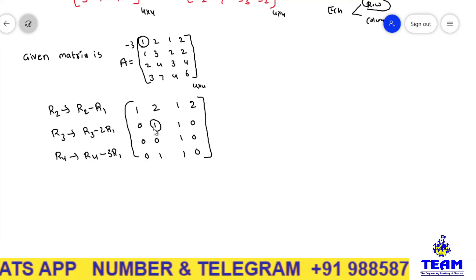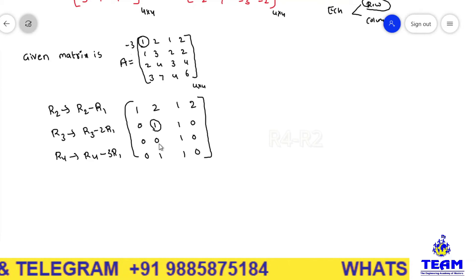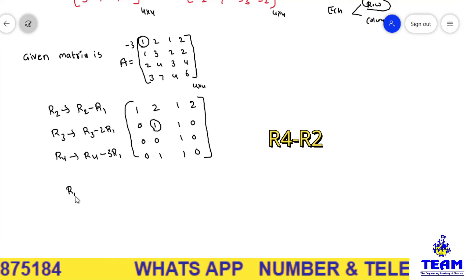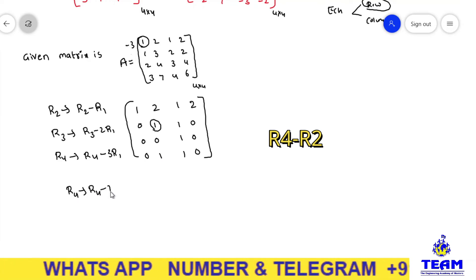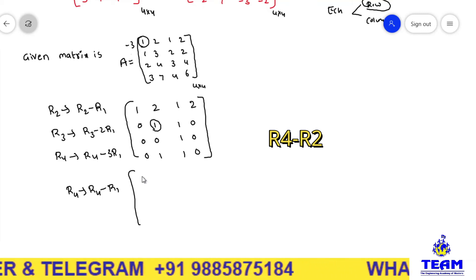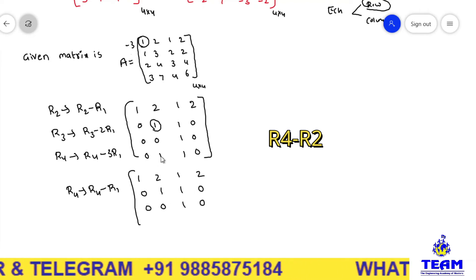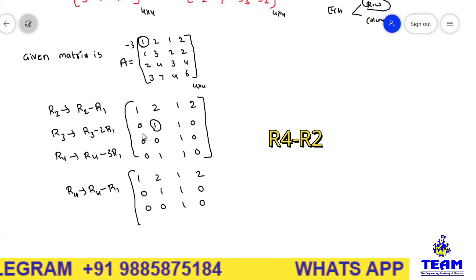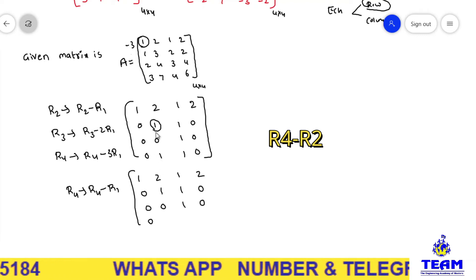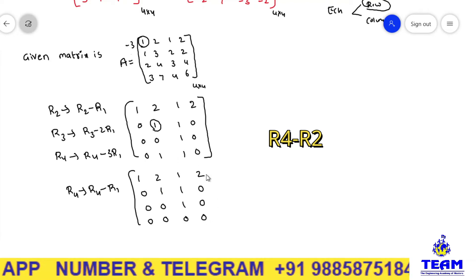Now round up the second diagonal element and use it to make the elements below it zero. Here we already have 0, and the element is 1. Applying R4 → R4 − R2: the first three rows stay as written — 1, 2, 1, 2; 0, 1, 1, 0; 0, 0, 1, 0. For R4: 0 minus 0 is 0, 1 minus 1 is 0, 1 minus 1 is 0, 0 minus 0 is 0.